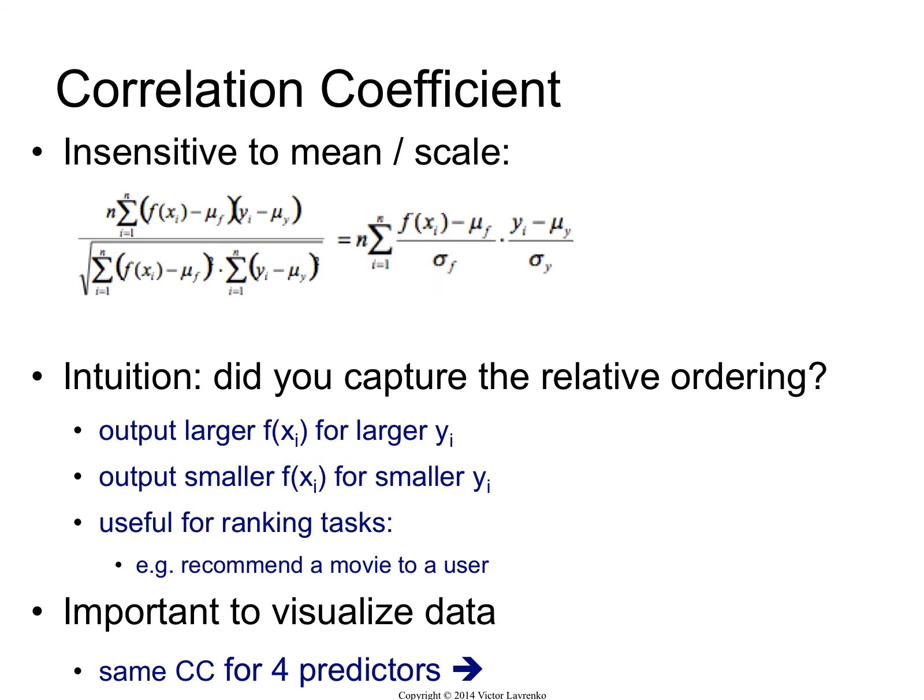The correlation coefficient is completely insensitive to both the mean and the scale of the predictions. There's a way to rewrite the correlation coefficient in a form that makes it obvious that that's what's happening. If you play around with the math a little bit, you can rewrite it like that.